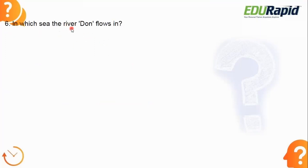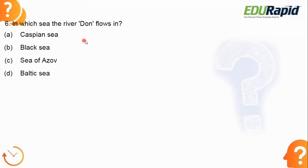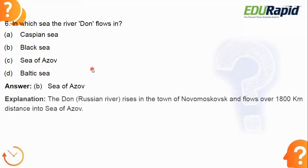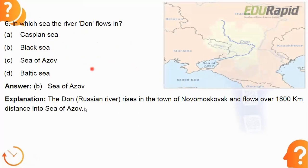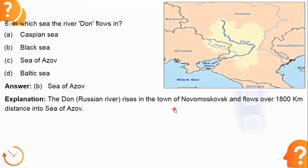Next: in which sea does the river Don flow? The options are the Caspian Sea, Black Sea, Sea of Azov, and Baltic Sea. The answer is the Sea of Azov. The Don is a Russian river that rises near the town of Novomoskovsk and flows over 1,800 kilometers into the Sea of Azov.